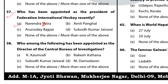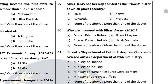Question 58: Who among the following has been appointed as the Director of the CBI? The answer is C — Subodh Kumar Jaiswal. Question 59: Ariel Henry has been appointed as the Prime Minister of which place recently? The answer is A — Haiti. Question 60: Who was honoured with the Bihari Award 2020? The answer is A — Mohan Krishna Bohra.